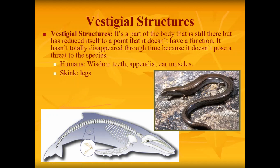Vestigial structures are parts of a body that are still there but have reduced to the point of having no function anymore. They haven't totally disappeared through time because they don't pose a threat to the species. Humans have vestigial structures including wisdom teeth, the appendix, and ear muscles — we do not use or need them anymore, so they're just there for no reason. The legs of a skink are another example. Skinks look like snakes but are not, and over time the skink found it didn't really need its legs, as they were a hindrance, so they've gotten smaller and smaller.